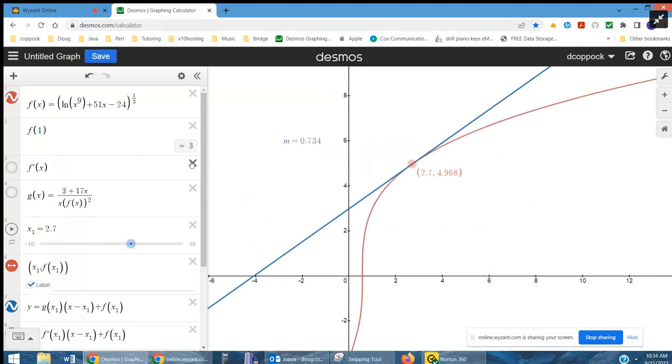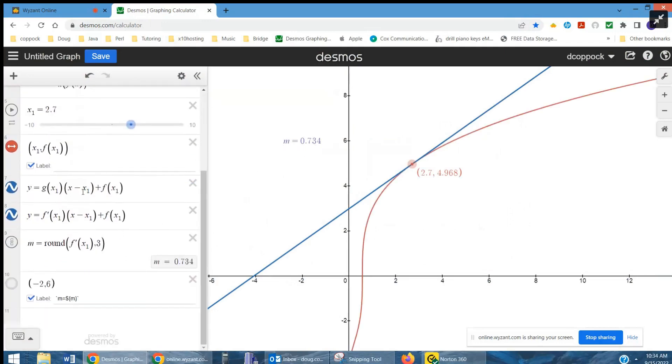There's the original function. Here is some tangent lines using both g of x sub 1 and f prime of x sub 1 to find the slope. And this movable point is on the curve. And there's the tangent lines. When you get down here, that slope gets pretty big. Almost infinity.